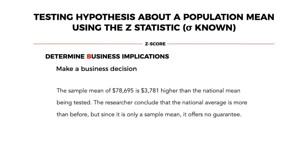The last step is to determine the business implications, which is to make a business decision. The sample mean of $78,695 is $3,781 higher than the national mean being tested. The researcher concluded that the national average is more than before, but since it is only a sample mean, it offers no guarantee.